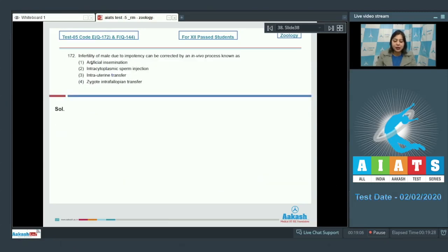Question number 172. Infertility of male due to impotency can be corrected by an in vivo process known as. In vivo process is a process that takes place in the body itself whereas in vitro process takes place in the laboratory. Number 1, Artificial insemination. This is correct as artificial insemination involves the deposition of collected semen in the female reproductive tract.